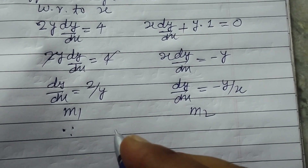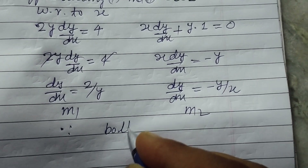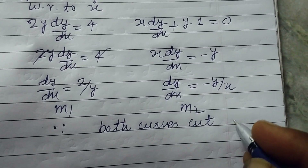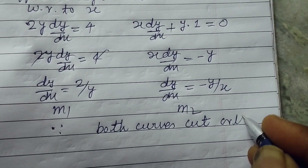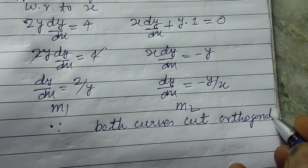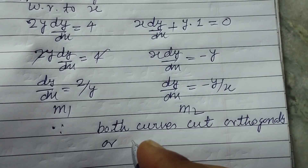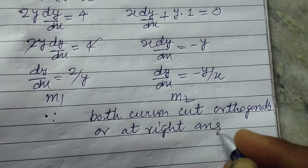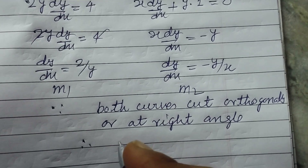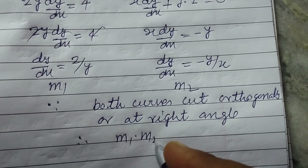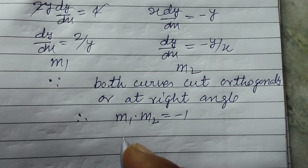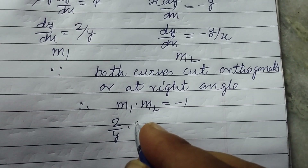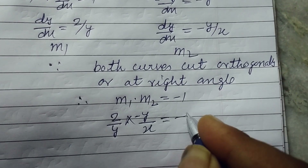Since both curves cut orthogonally or at right angle, therefore the product of their gradients will be -1. So m1·m2 = (2/y)·(-y/x) = -1.